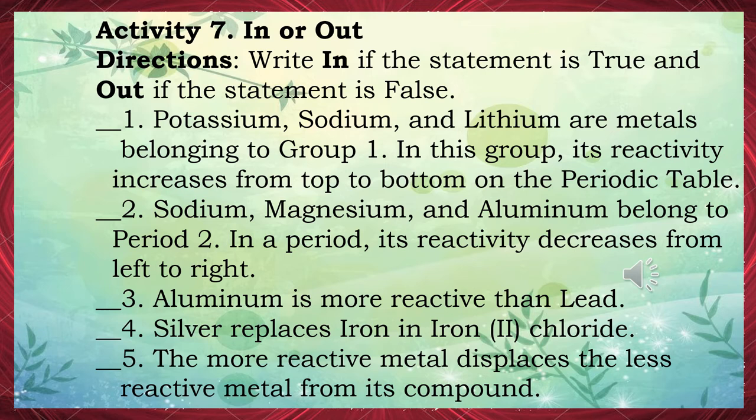Number 2: Sodium, magnesium, and aluminum belong to period 3. In a period, reactivity decreases from left to right. The answer is in. Number 3: Aluminum is more reactive than lead. The answer is in. Number 4: Silver replaces iron in iron(II) chloride. The answer is out. Number 5: The more reactive metal displaces the less reactive metal from its compound. The answer is in.